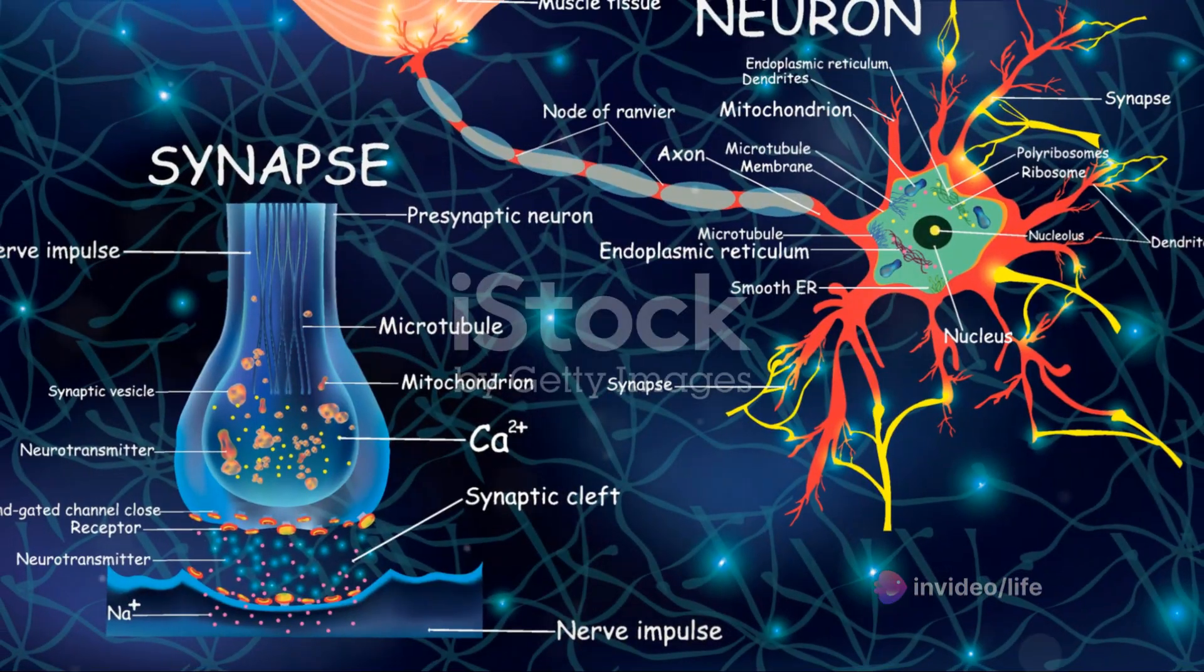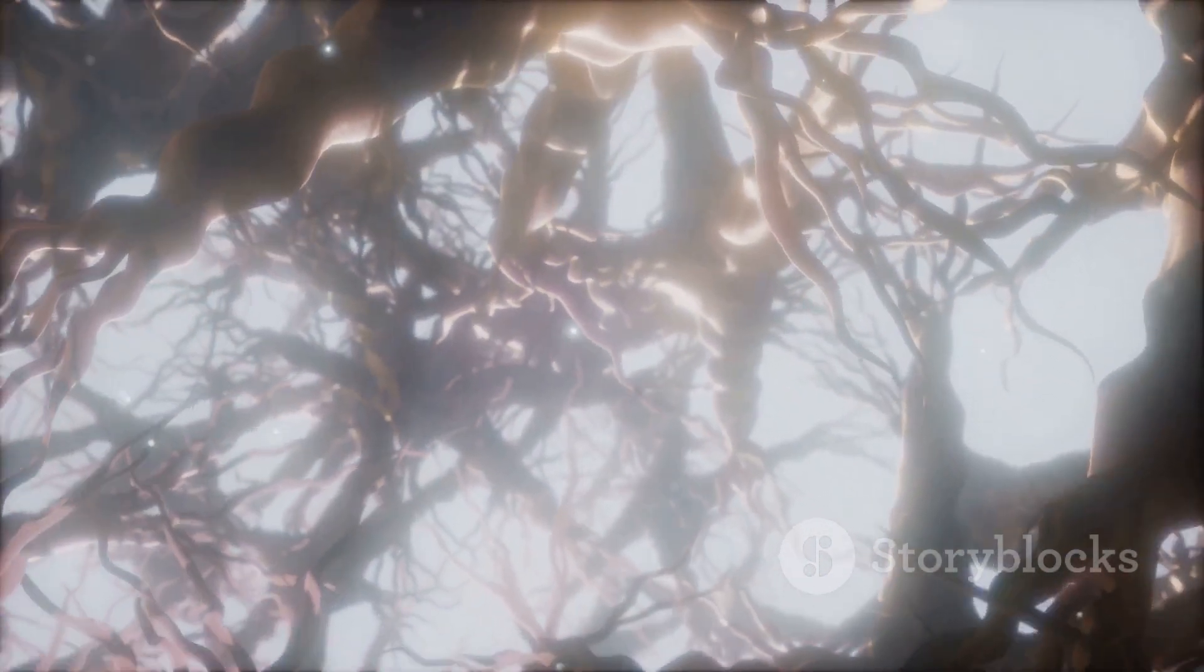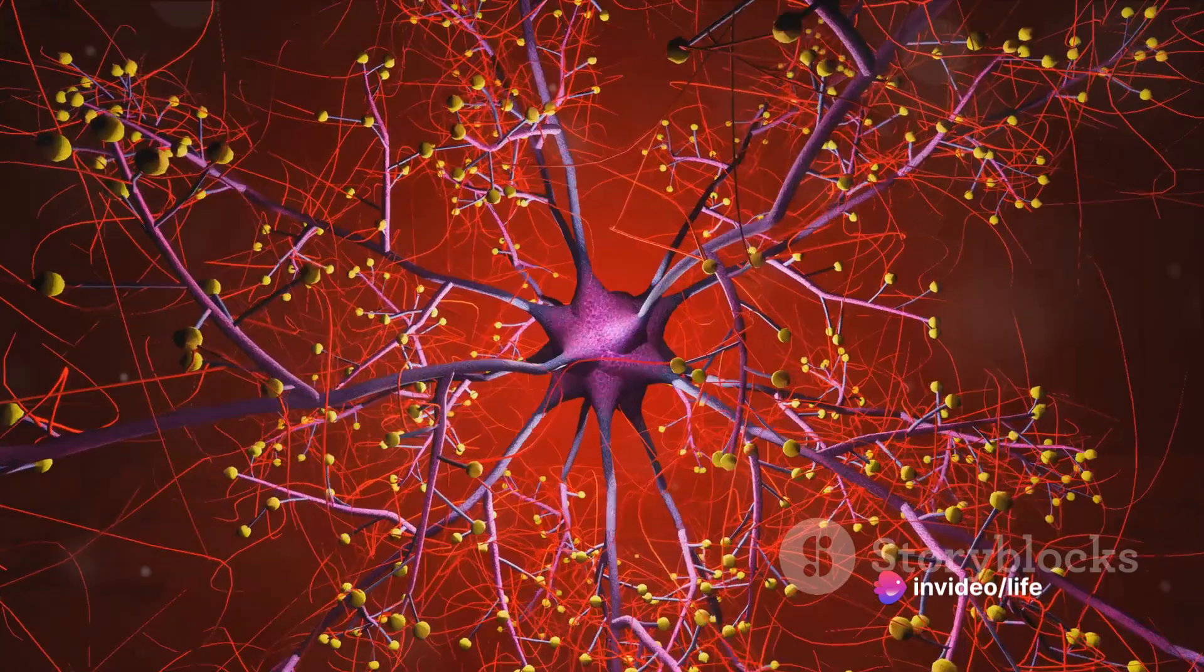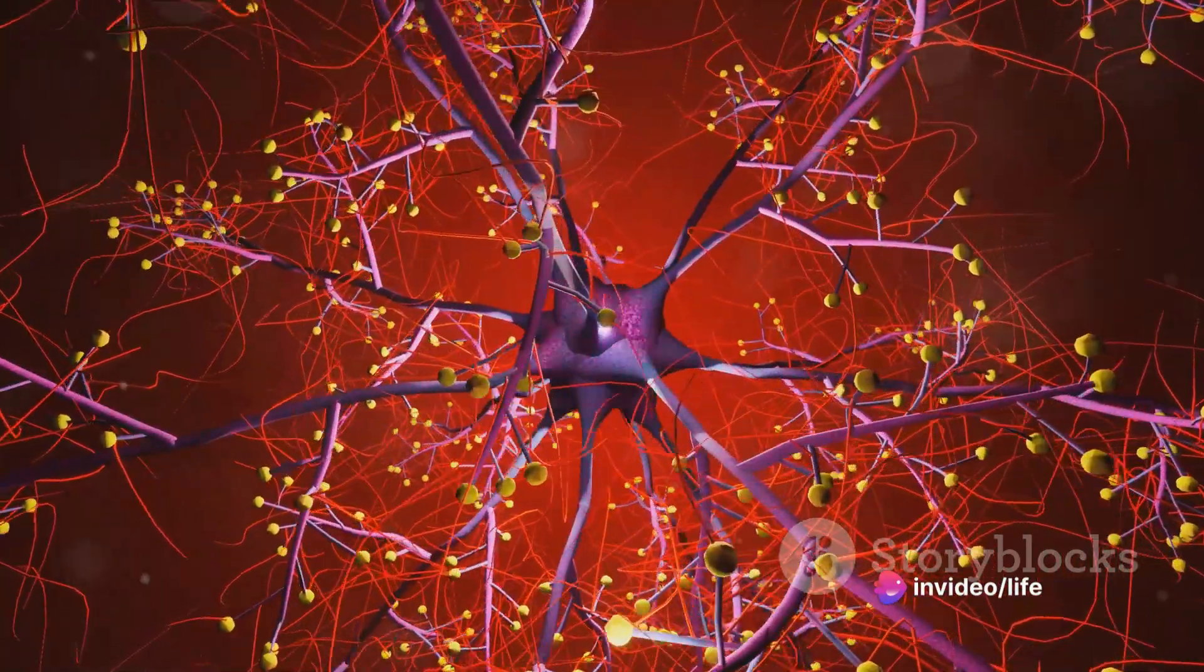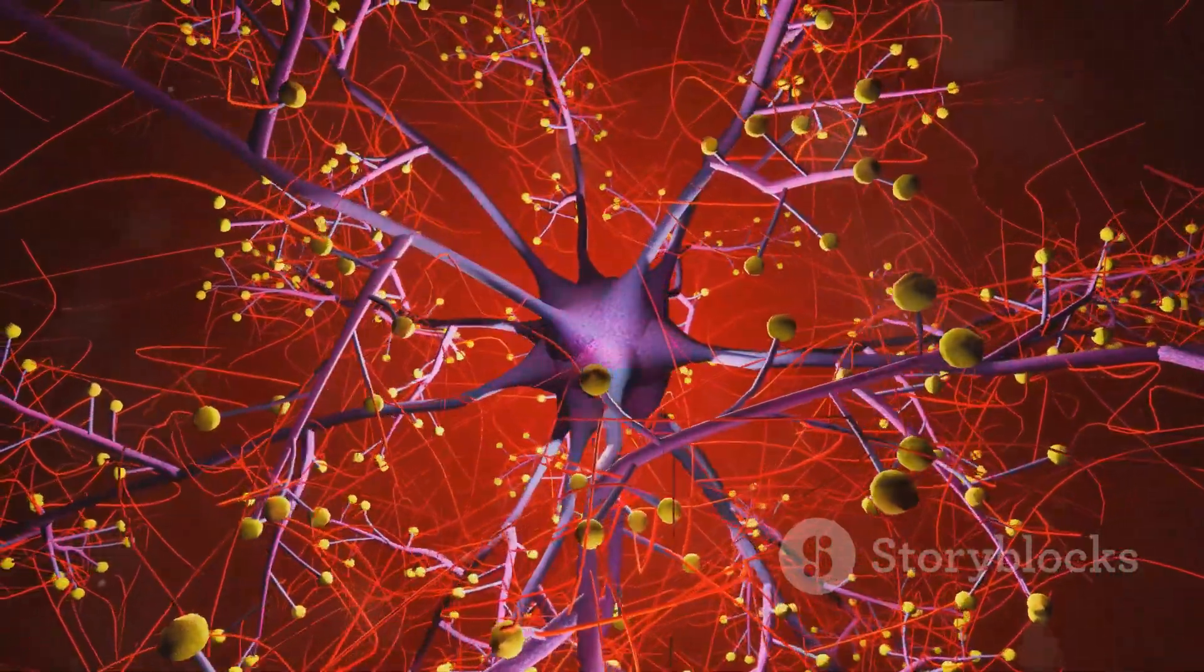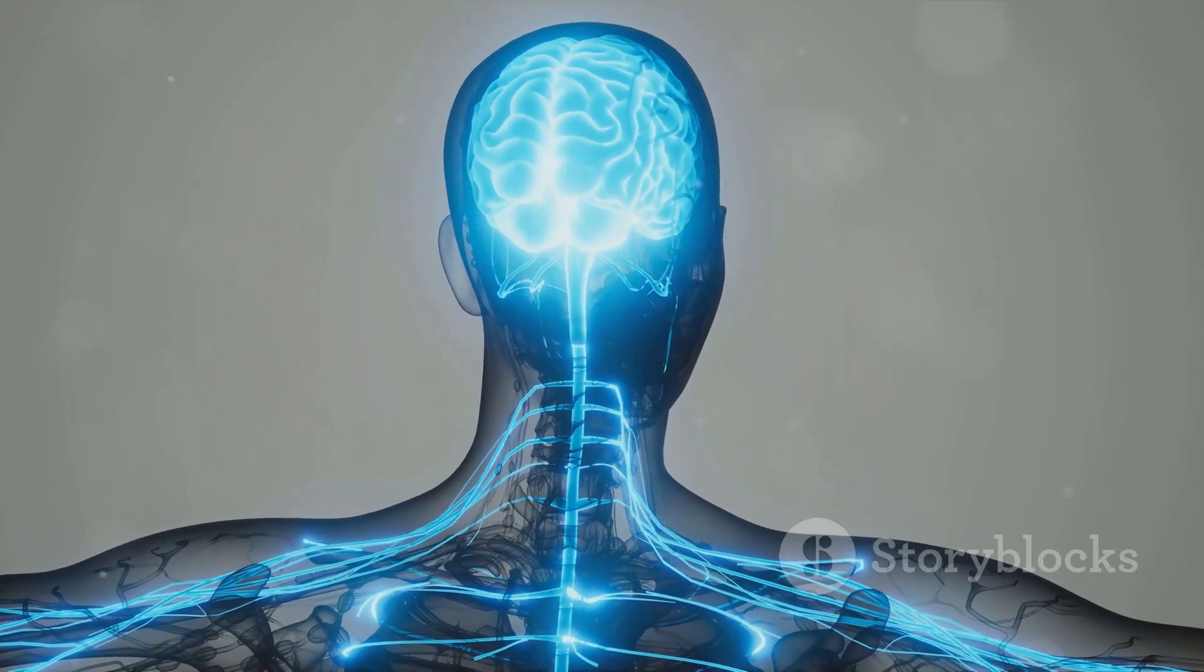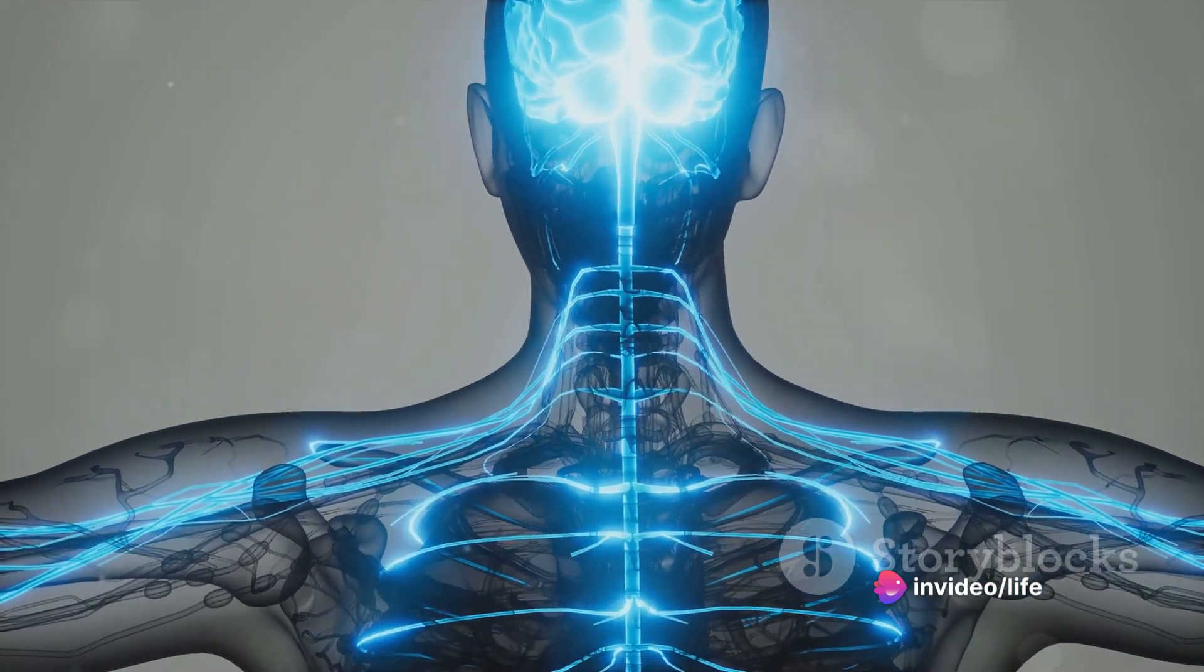In this video, we've explored the intricate workings of the brain and hormones. We've learned how the brain functions like a bustling city with neurons communicating to ensure smooth operations. We've also learned how hormones like messengers deliver important information to regulate various body functions. And we've discussed the relationship between the brain and hormones and how disruptions can lead to health issues.